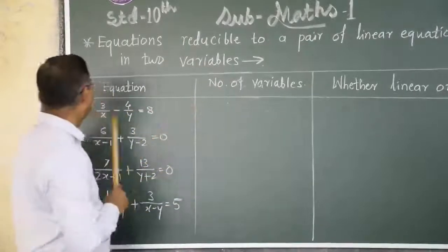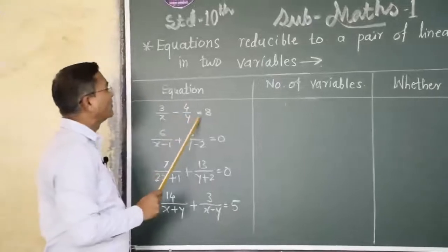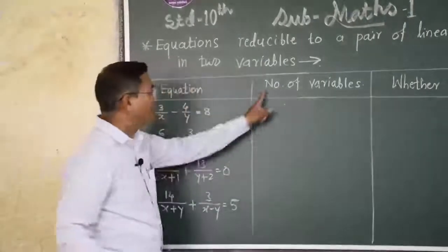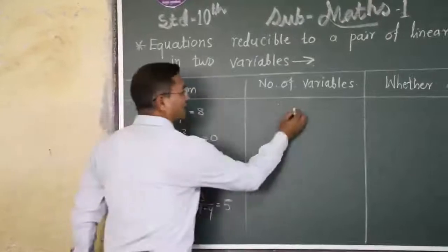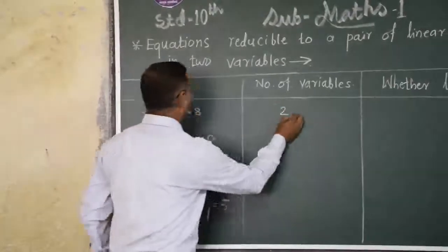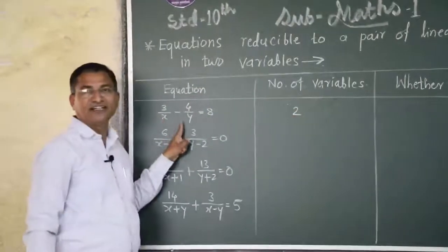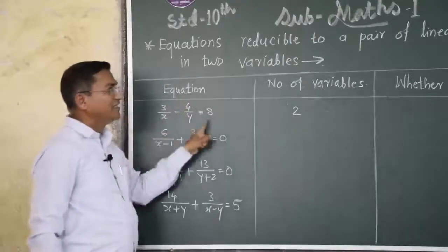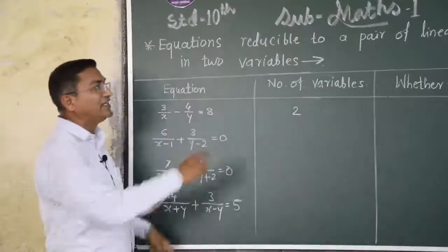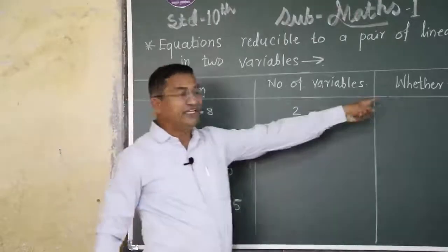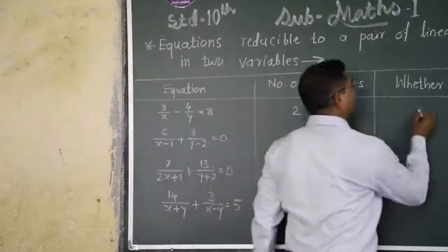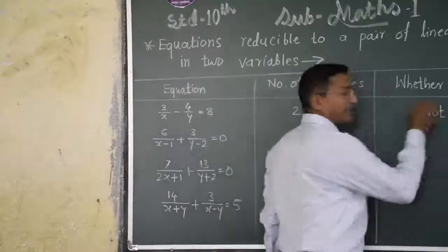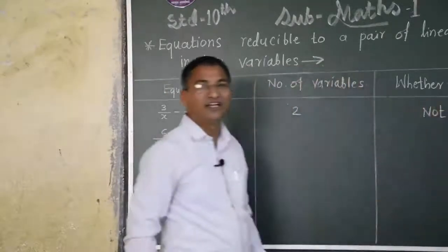For example, consider 3 upon x minus 4 upon y is equal to 8. There are two variables: x and y. But if we simplify this equation, this is not a linear equation. It is not a linear equation in two variables.